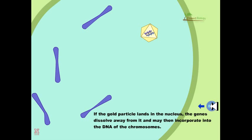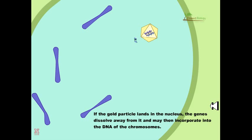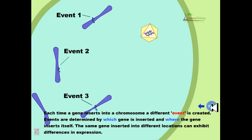Each time a gene inserts into a chromosome, a different event is created. Events are determined by which gene is inserted and where the gene inserts itself. The same gene inserted into different locations can exhibit differences in expression.